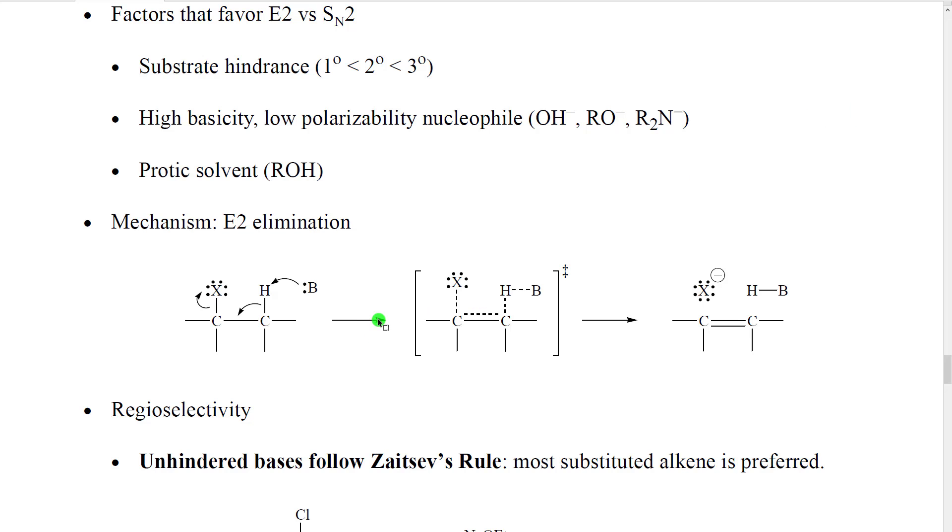If we look at the mechanism, it's a one-step mechanism. The base makes a bond to the beta hydrogen. The beta hydrogen can only have one bond to it, so it lets go of a hydrogen on the other side which pushes toward the alpha carbon and pushes out the leaving group. We get a transition state and this is our product.